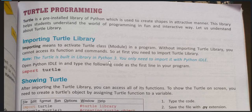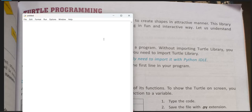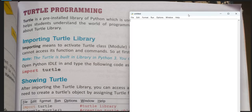Note that turtle is built in library in Python 3. So turtle is a part of Python 3. You only need to import it with the Python IDLE. Open a Python IDLE and type the following code as a first line in your program. We are using Python IDLE to write a program. So we will just write import turtle. Now all the functions we can use in our program.